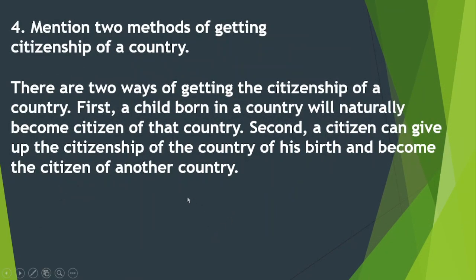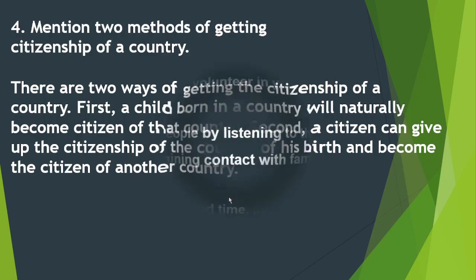Question 4: Mention two methods of getting citizenship of a country. First, a child born in a country will naturally become the citizen of that country. Second, a citizen can give up the citizenship of the country of his birth and become the citizen of another country.